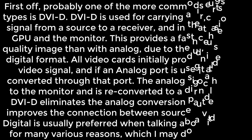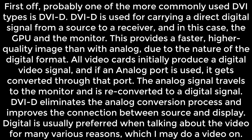Probably one of the more commonly used DVI types is DVI-D. DVI-D is used for carrying a direct digital signal from a source to a receiver — in this case, a GPU and the monitor. This provides a faster, higher quality image than with analog due to the nature of the digital format. All video cards initially produce a digital video signal, and if an analog port is used, it gets converted to the port. The analog signal then travels to the monitor and is reconverted to a digital signal.